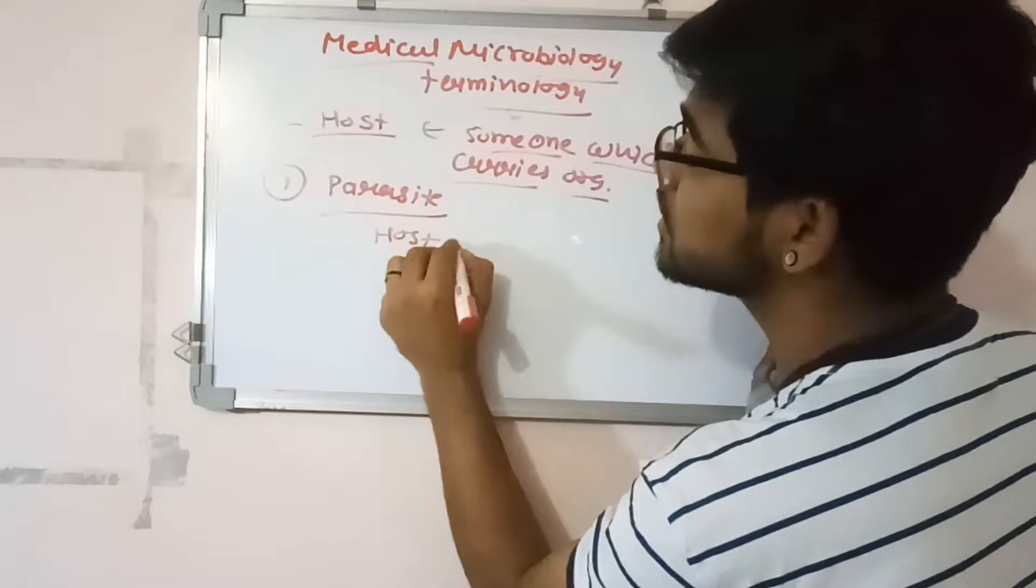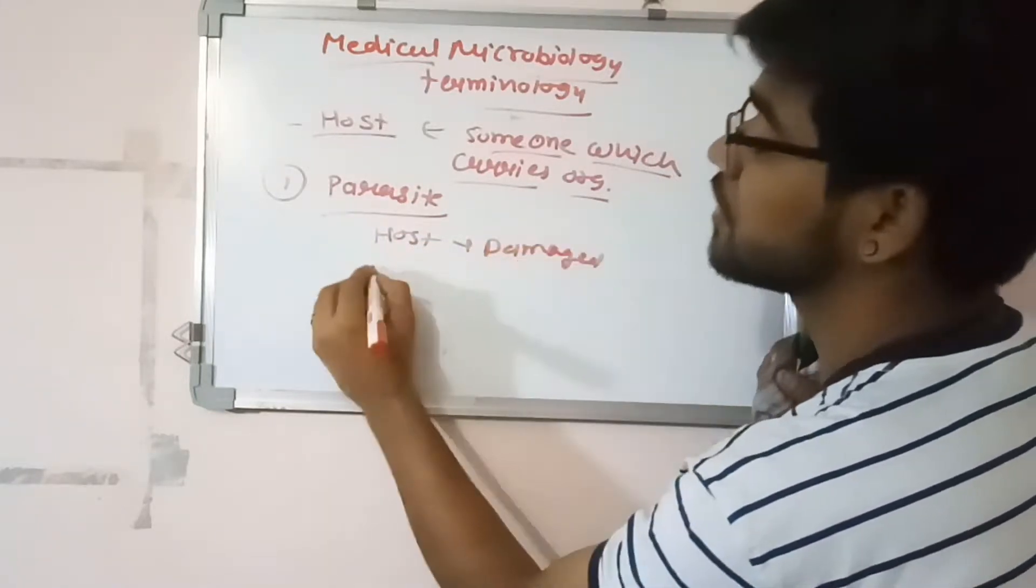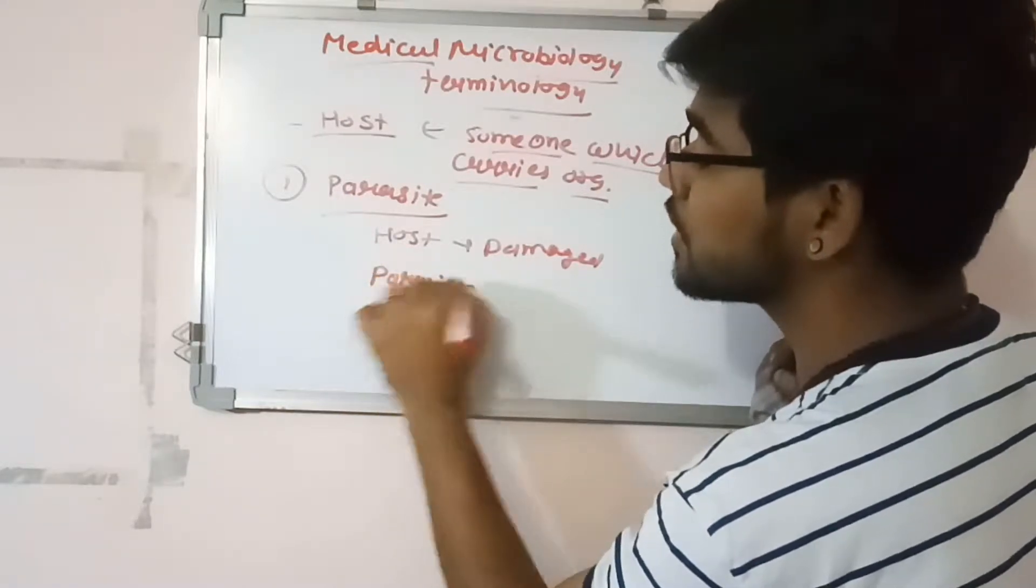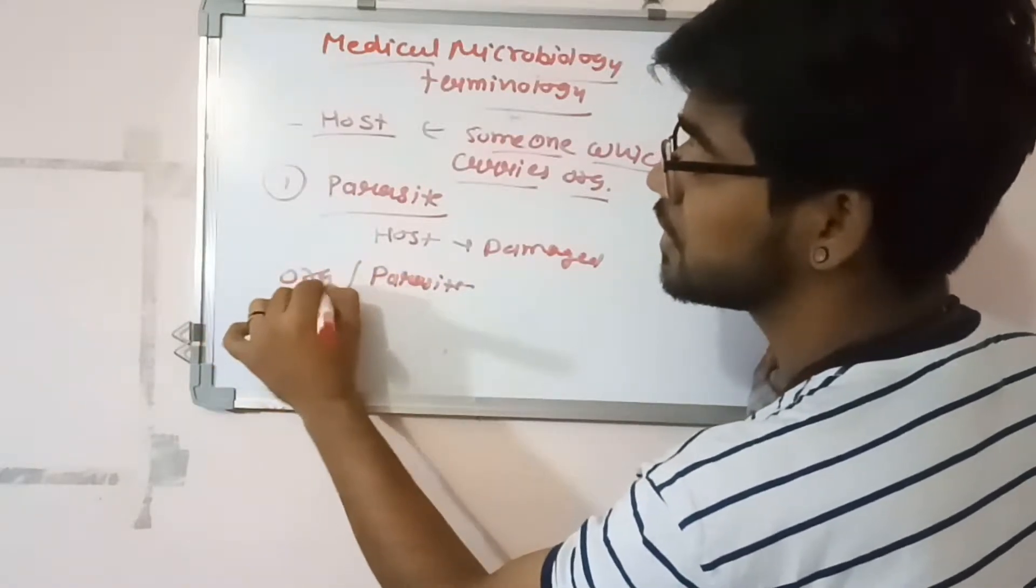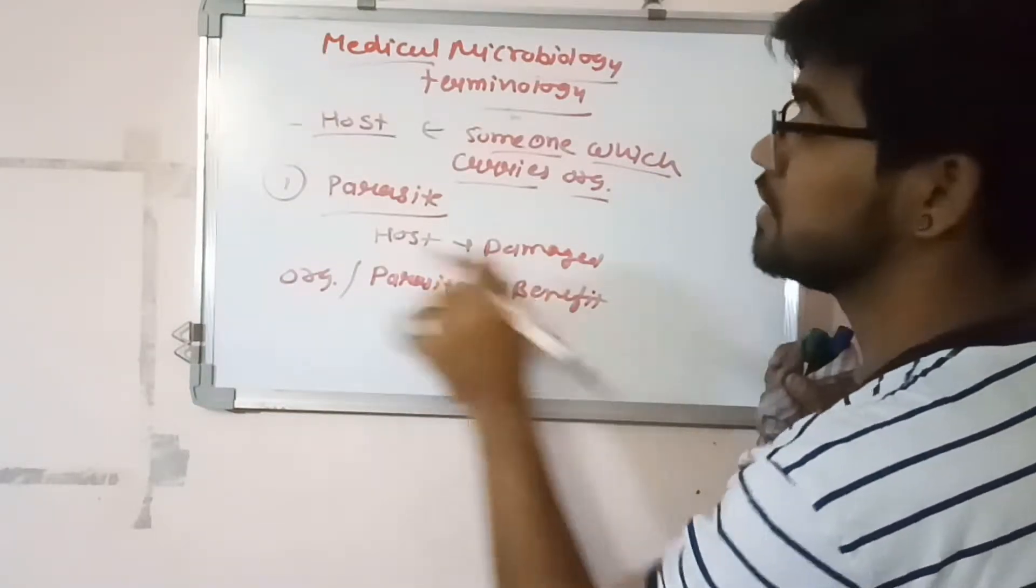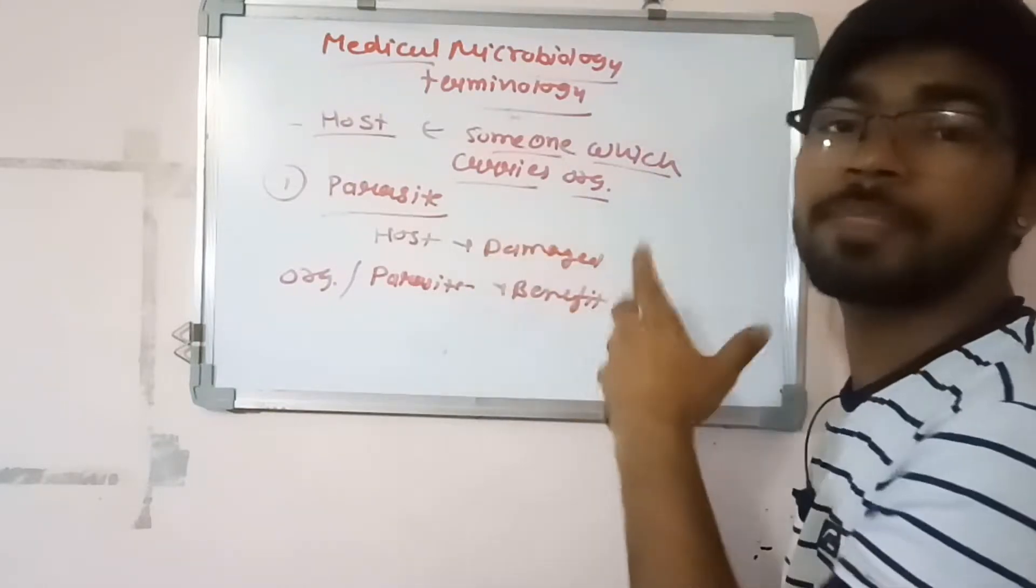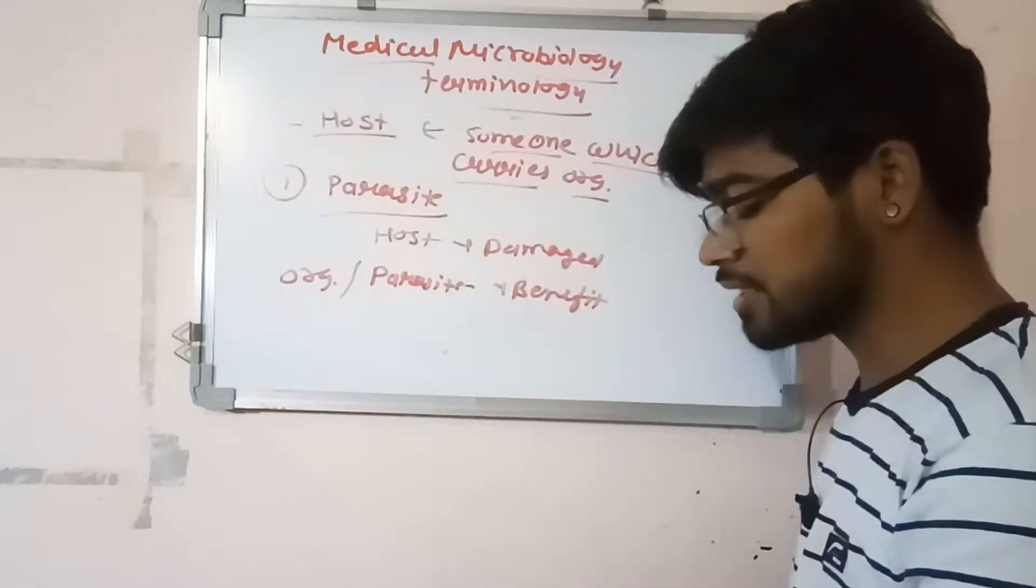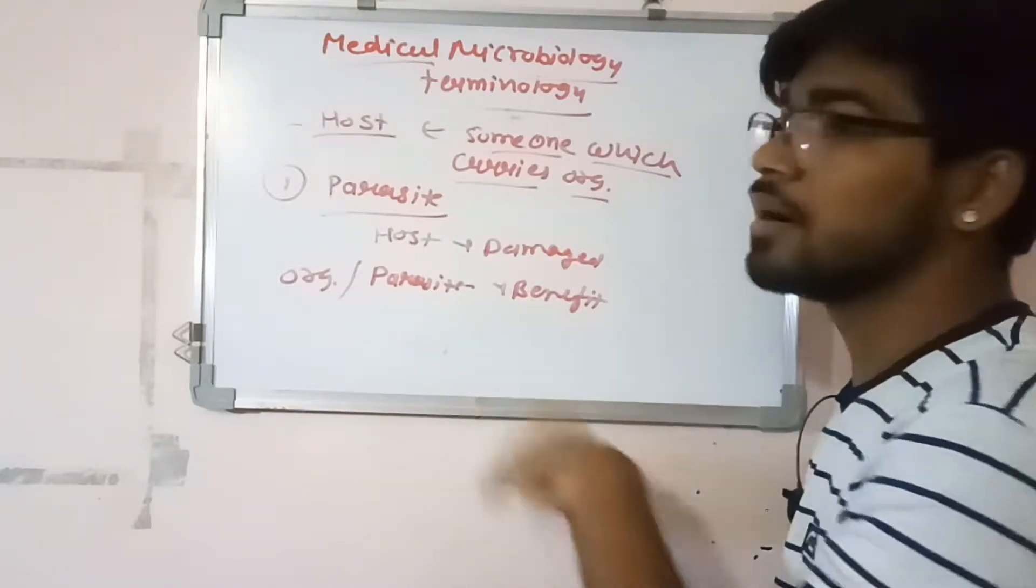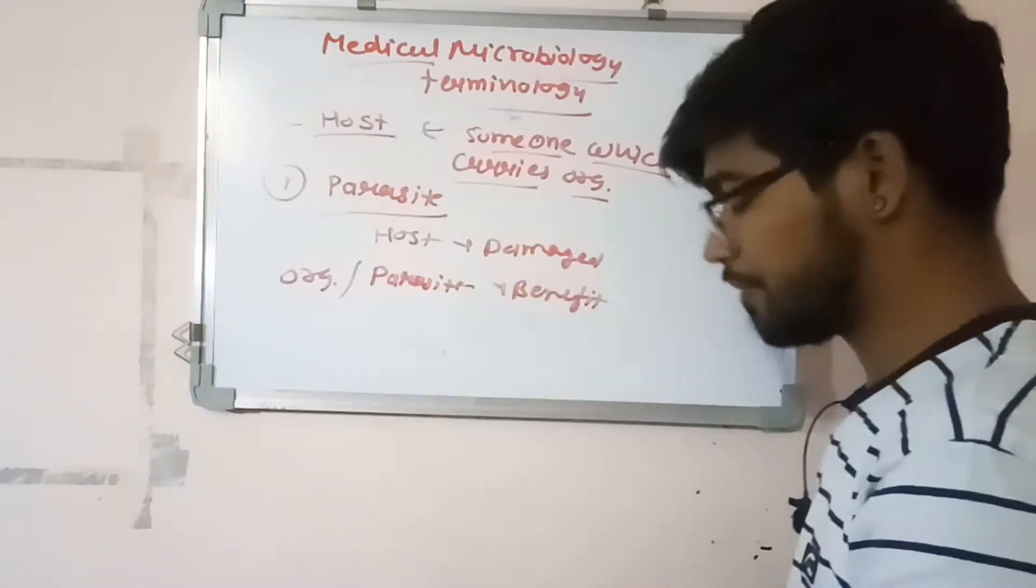In parasite, the host is damaged due to the effect of parasite, and the organism will get benefit. This is called parasite - one will be damaged and one will benefit. This is the simple condition of disease where the host is damaged and the organism or pathogen inside us will benefit.